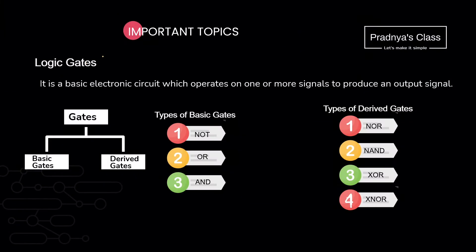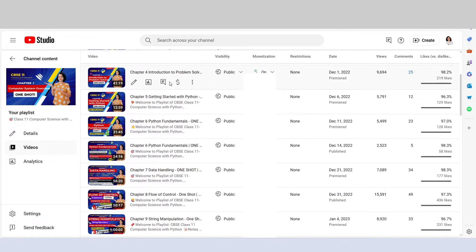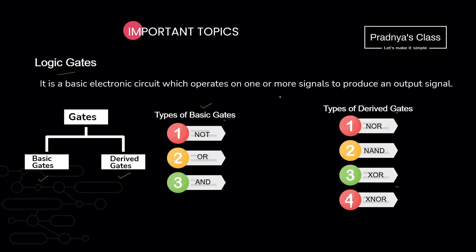If we talk about this chapter, the first important topic is logic gates. You may or may not get a question directly on this topic, but you should be aware of the gates. If you are not familiar with all the gates, I would suggest you go through this playlist where all the topics are covered in one shot. Out of the two types of gates, you should be well familiar with the basic gates, because knowledge of these three gates will be helpful to solve other types of questions. Let me explain these three gates in short.